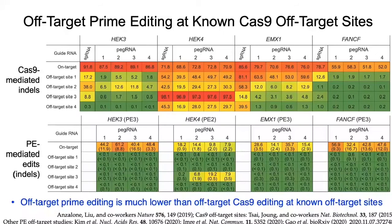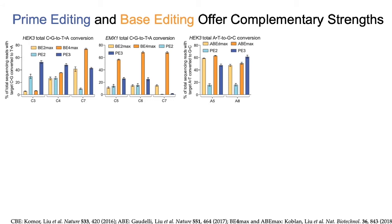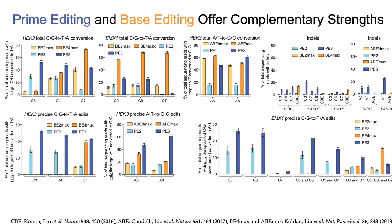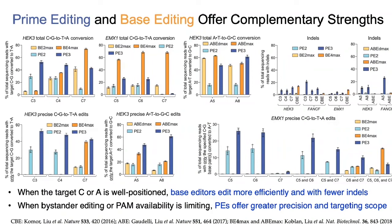As you have probably gathered from all the data I've presented, base editing and prime editing offer complementary strengths. Base editors have been relentlessly studied and optimized for four years now and have been used in hundreds of publications. They currently offer higher editing efficiencies and lower indel levels than prime editors, at least at target sites that are well-suited for base editing. When the target nucleotide does not lie within the base editing window, however, prime editors offer higher efficiencies. And because prime editors are immune to bystander editing, they have little difficulty editing, for example, the first and third of a string of three consecutive Cs, whereas base editors will edit all the Cs within the roughly 4 or 5-nucleotide-wide base editing window. So base editors offer higher efficiency and fewer indels, while prime editors offer greater versatility, precision, and targeting scope.